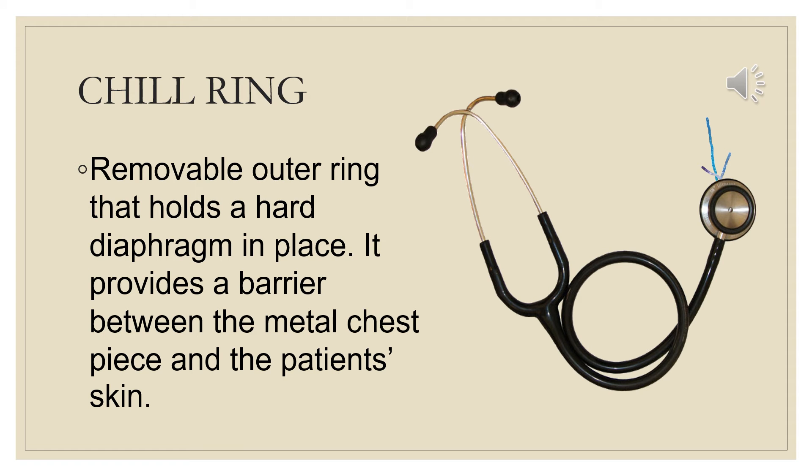Now we will learn about the chill ring, which is labeled in the diagram. The chill ring is a circular portion — it is a removable outer ring that holds the hard diaphragm in place. It provides a barrier between the metal chest piece and the patient's skin.